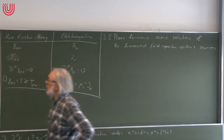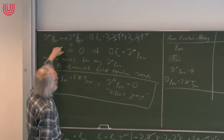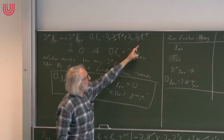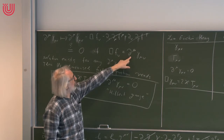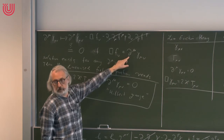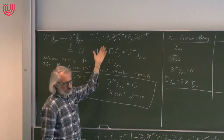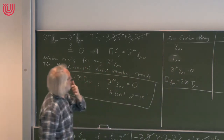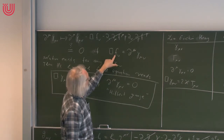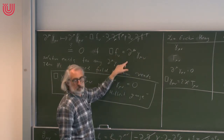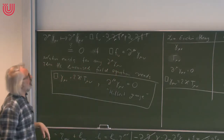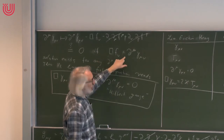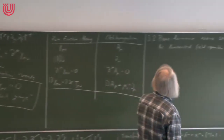Before proceeding: we made a coordinate transformation to kill the divergence by solving □f_μ = ∂^ν γ_μν. But from that equation, we are still free to make further gauge transformations where □f_ν = 0, because then the zero is preserved. So we have not yet fixed coordinates uniquely — we still have residual gauge freedom corresponding to solutions of □f_ν = 0. We will make use of this freedom shortly.